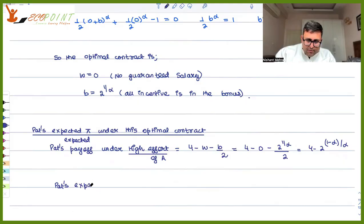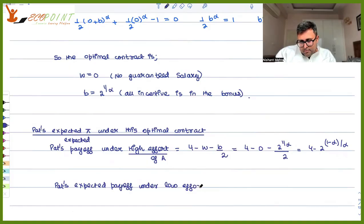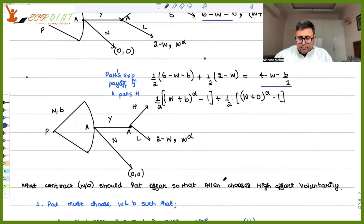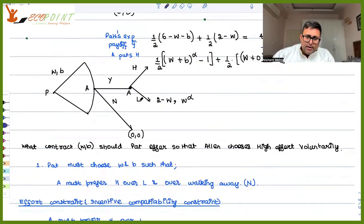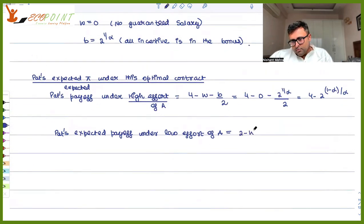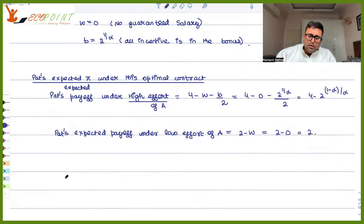Similarly, Pat's expected payoff under low effort of Ellen — if Ellen has accepted the contract but puts in low effort — the payoff was two minus W. With W equal to zero, that gives Pat a payoff of two. Pat will offer this contract only if the expected payoff from high effort is greater than or equal to the expected payoff from low effort.